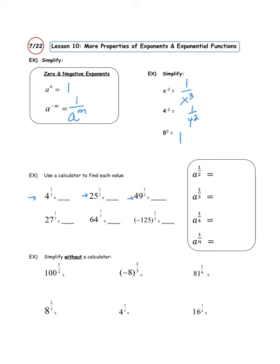For those of you working with a TI-83 calculator, you're going to type this in like so: go four, hit the caret button, and then you're going to need parentheses — open parentheses, one divided by two, close parentheses, and hit enter. If you don't do it that way, it's going to take four to the first power and then divide that result by two, which is not what we want. So go ahead and type those in.